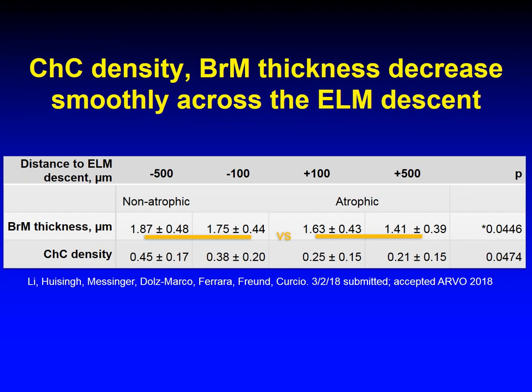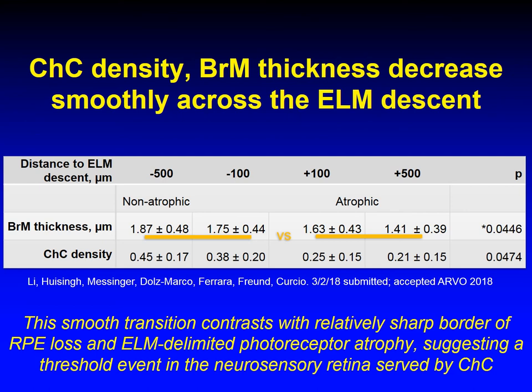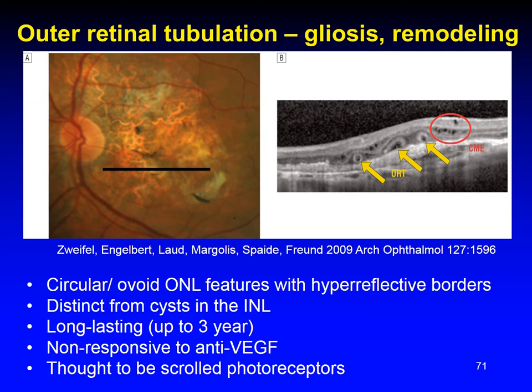Across the border of geographic atrophy and the ELM descent, Bruch's membrane thins and choriocapillaris density declines but is not zero. The smooth transition in the Bruch's membrane-choriocapillaris complex looks like the age-related disease and contrasts with a relatively sharp border of RPE loss and ELM-delimited photoreceptor atrophy, suggesting a threshold event in the neurosensory retina served by the choriocapillaris.